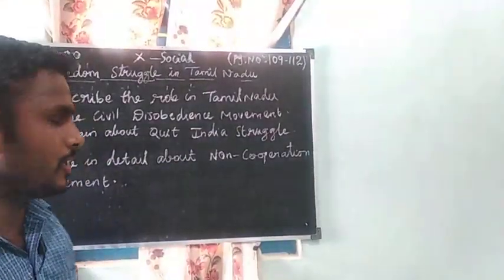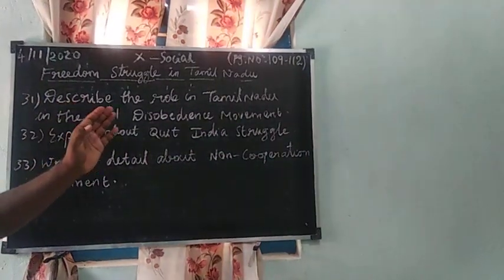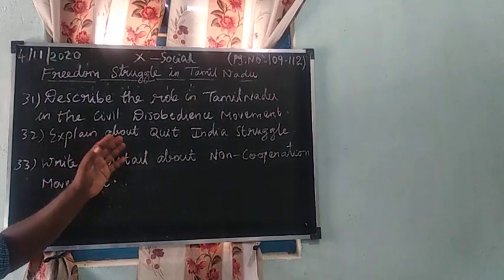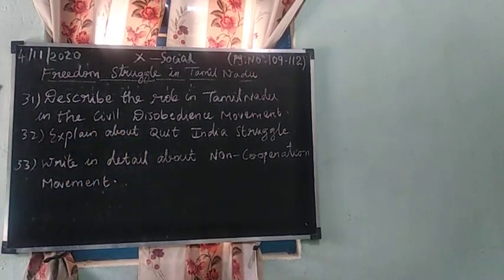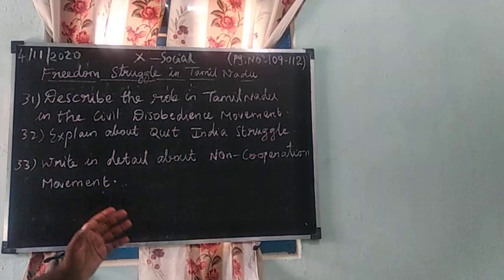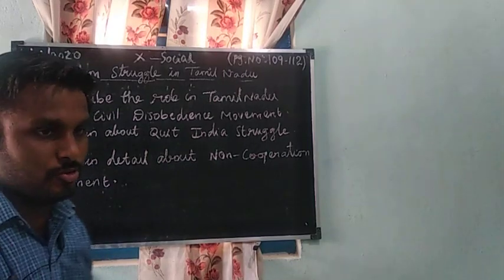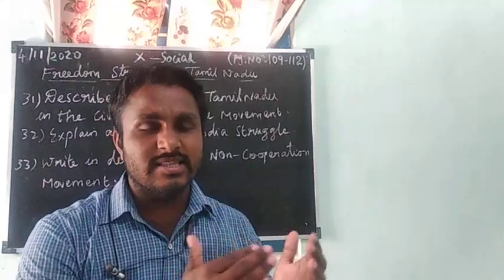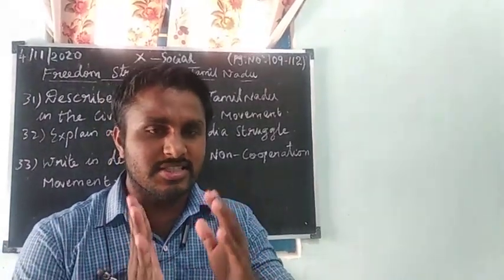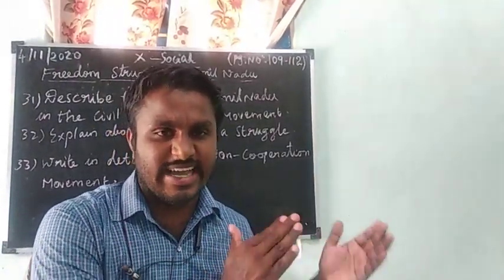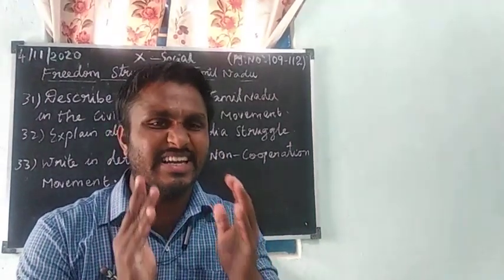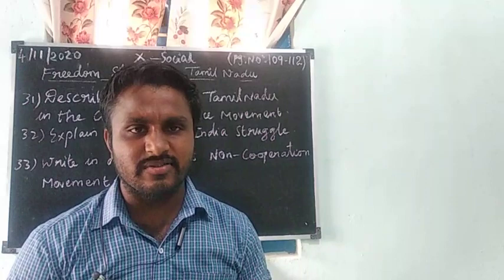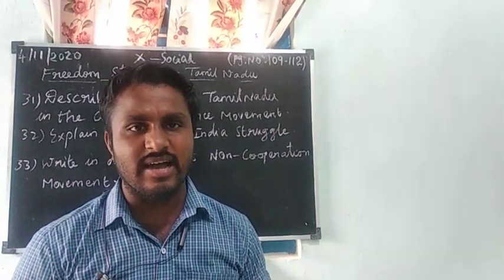Now learn and write the following questions: describe the role of Tamil Nadu in the civil disobedience movement; explain about the Quit India struggle; write in detail about the non-cooperation movement. This is all we learned in this lesson. Compare the 8th and 9th lesson history — it is very easy to learn. I hope you understood this session well. Read well. Thank you. Have a nice day.